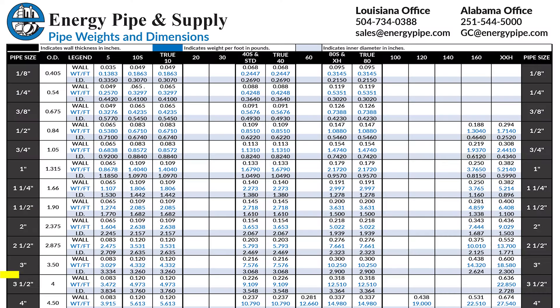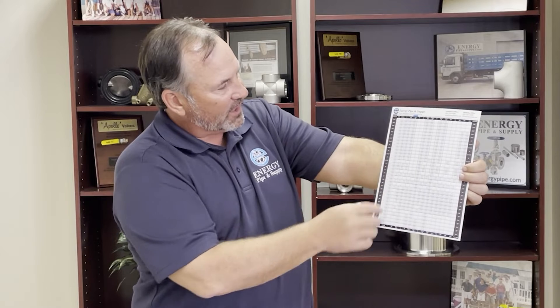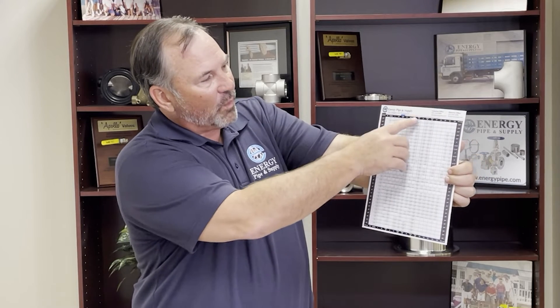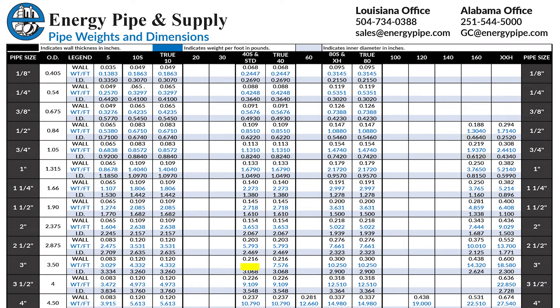It'll also give you an ID and the wall thickness. So let's break down what you're looking at when you're looking at a pipe chart. For three inch pipe, the next column is going to show you exactly the outside diameter, which is the OD on the pipe chart. It'll also give you the wall — so for standard wall or schedule 40S, it's going to give you that wall thickness. And then underneath there it will give you the ID of that pipe, which means the inside diameter.